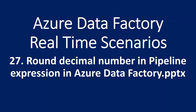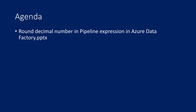Hi friends, welcome to OFA Studies YouTube channel. This is part 27 in the Azure Data Factory real-time scenarios playlist. In this video, we are going to discuss how to round a decimal number in pipeline expressions in Azure Data Factory. We are going to practically see how to get this round function functionality in the pipeline expression.